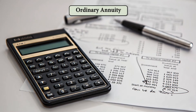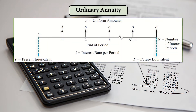We are now going to proceed with the first topic, which is the ordinary annuity. As shown, this is the time diagram or cash flow diagram of an ordinary annuity. The ordinary annuity is the type of annuity wherein the payments are made at the end of each payment interval — at the end of the first year, at the end of the second year, and so on, up to the nth number of periods, using I as the interest rate per period.